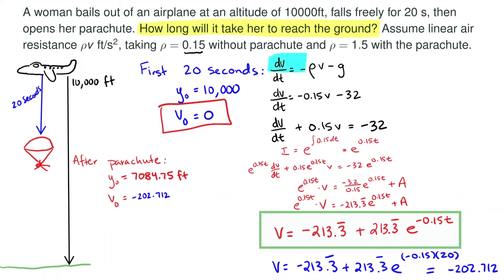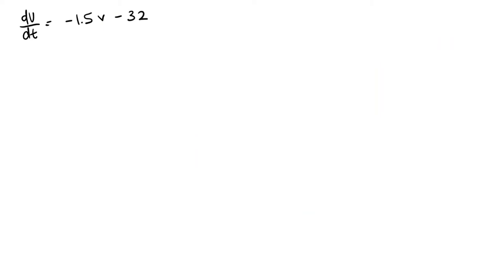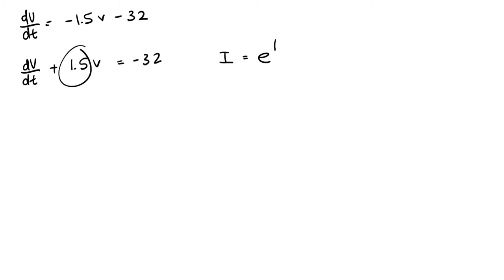We're going to follow a similar approach, but now due to the parachute, the air resistance has increased and the equation becomes dv/dt equals negative 1.5 velocity minus 32. On our new page, adding 1.5v to both sides gives dv/dt plus 1.5v equals negative 32. This is a linear first order differential equation, and we find our integrating factor to be e to the 1.5t.